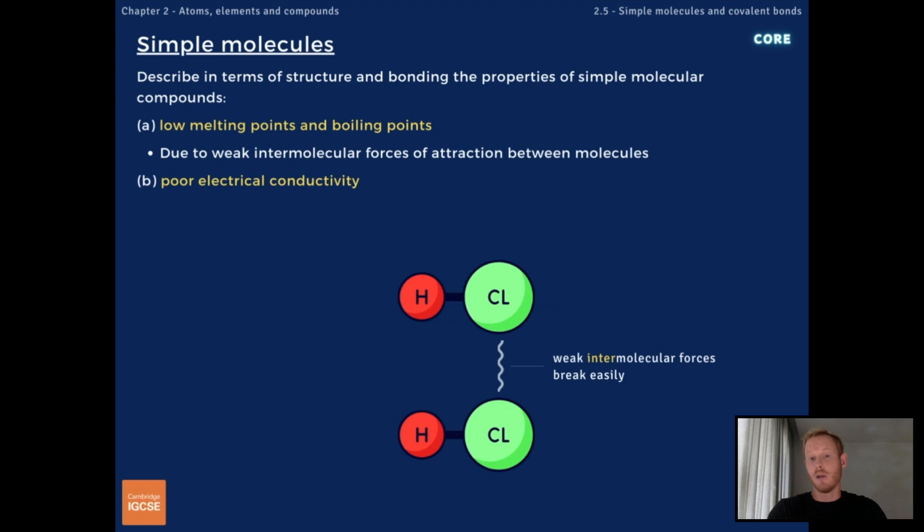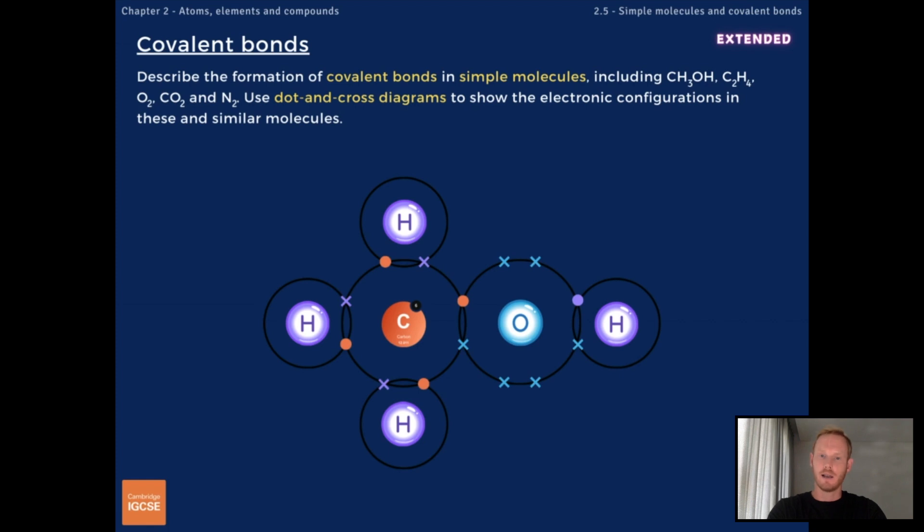So simple molecular compounds have low melting and boiling points, which is why many are gaseous at room temperature. This is because molecules are attracted to one another by weak intermolecular forces that are easily broken when a substance is heated. Simple molecular compounds are also poor conductors of electricity, and this is because they're made of uncharged molecules. Okay, that's everything you need to know for core, so we'll move on now to the extended section.